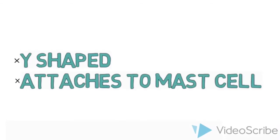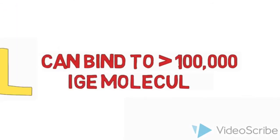The tail of an IgE molecule is Y-shaped and it attaches itself to certain cells in the body called mast cells. A single mast cell can bind more than 100,000 IgE molecules.